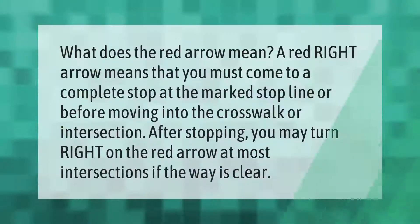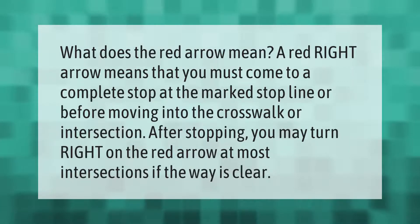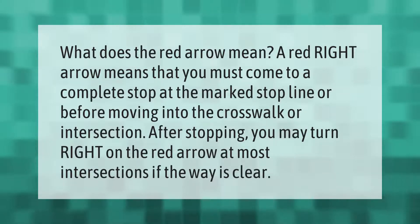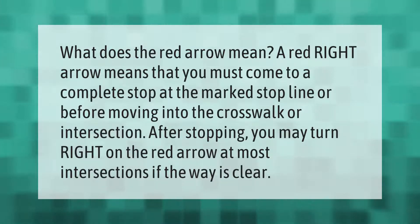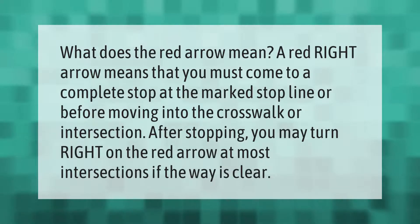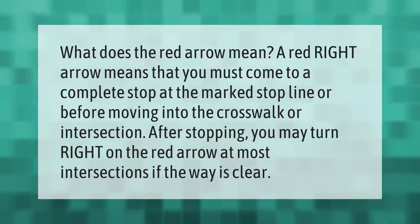What does the red arrow mean? A red right arrow means that you must come to a complete stop at the marked stop line, or before moving into the crosswalk or intersection. After stopping, you may turn right on the red arrow at most intersections if the way is clear.